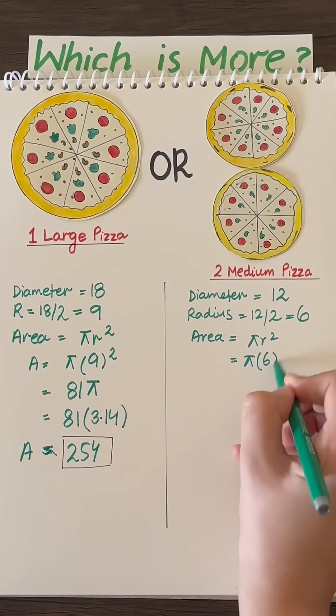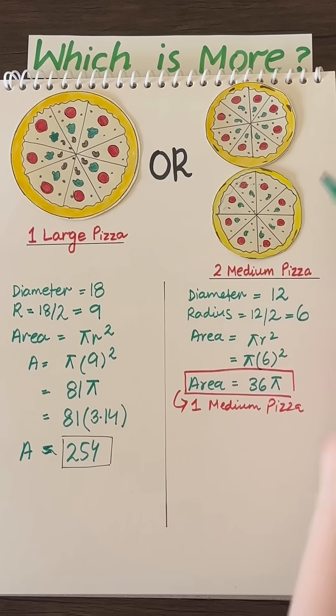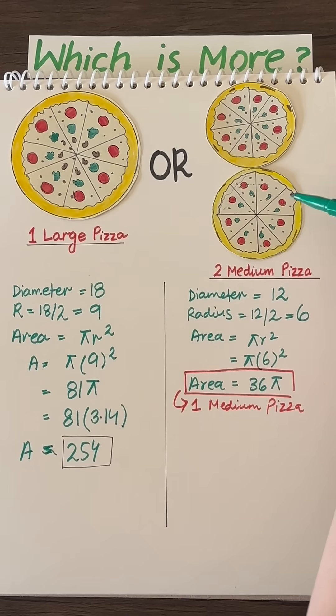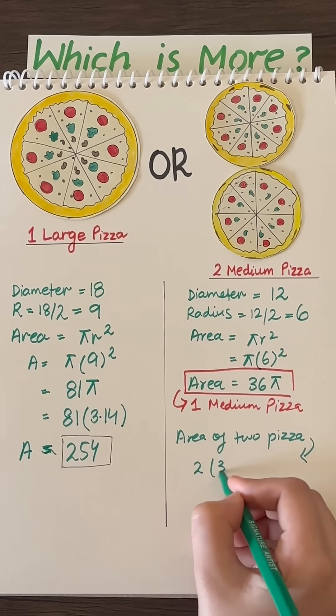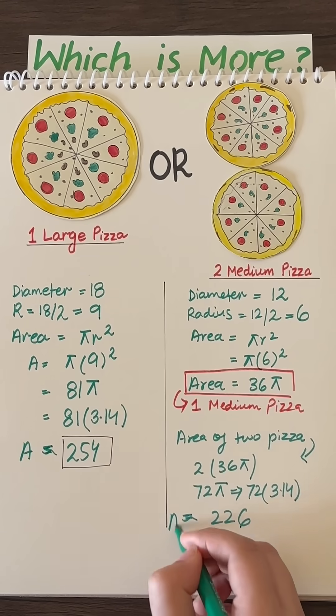Finding out the area, we do 6 squared, which comes out to be 36 pi. And this is the area of one medium pizza. To get the area of two medium pizzas, simply multiply 36 pi by 2, and here we got an approximate area of 226 square inches.